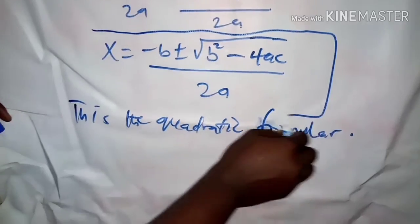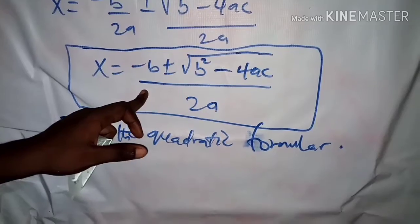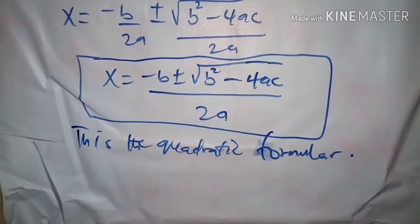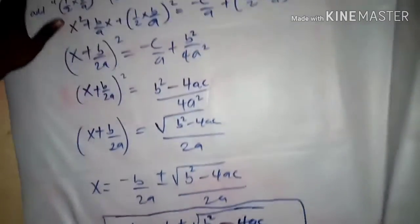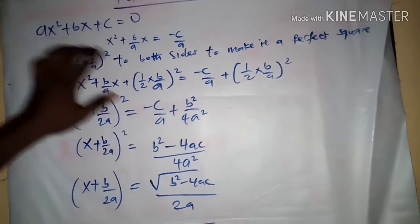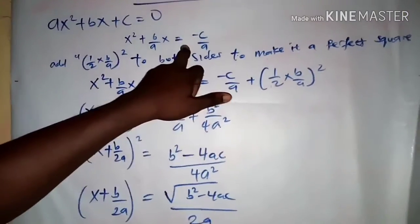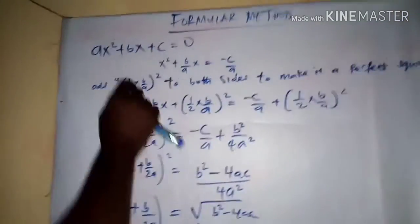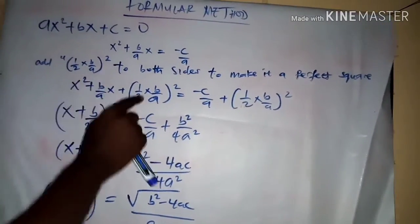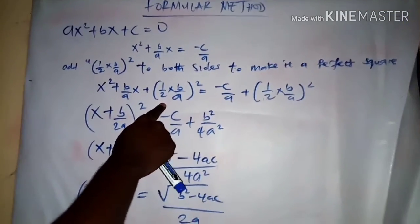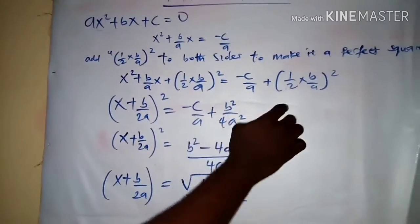The method I used in deriving this formula is just the completing the square method that we have done before. I divided all through by the coefficient of x², which we always do, then I moved my c to the other side to make it a perfect square. I then added half of the coefficient of x, which is b over 2a, to both sides.